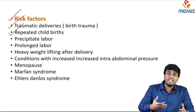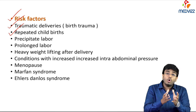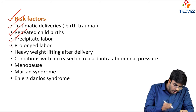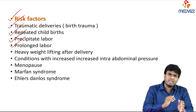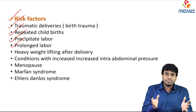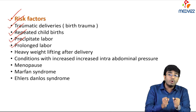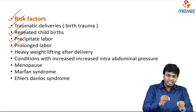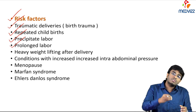Repeated childbirths weaken the pelvic diaphragm and stretch ligament supports. Prolonged labor (e.g., over 25 hours) stresses muscles, the pelvic diaphragm, and ligaments so they lose their tone and can no longer support the uterus properly. Precipitate labor — very fast labor — can also damage the pelvic diaphragm and ligaments, leading to pelvic organ prolapse.